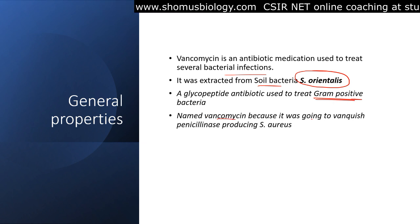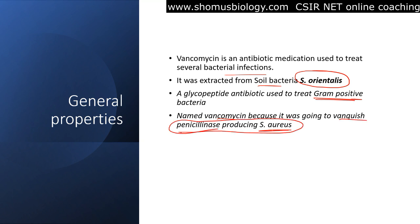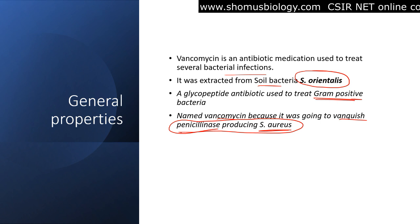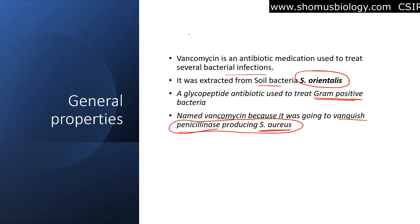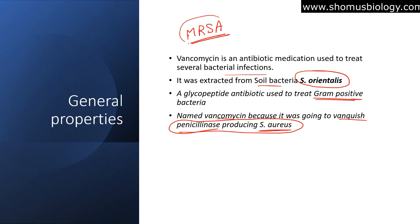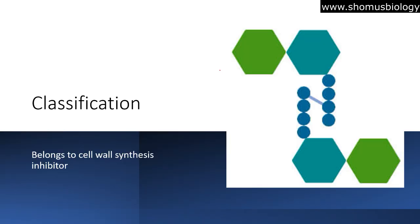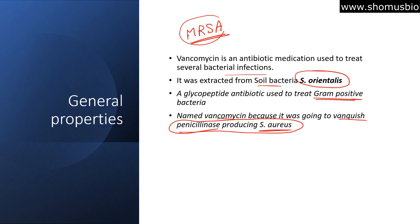Vancomycin is named because it was going to vanquish the penicillinase-producing Staphylococcus aureus. The name came from 'vanquishing' penicillinase production because Staphylococcus aureus is resistant against penicillinase and resistant against most drugs. We call them multi-drug resistant Staphylococcus aureus, or MRSA. MRSA strains are called superbugs.